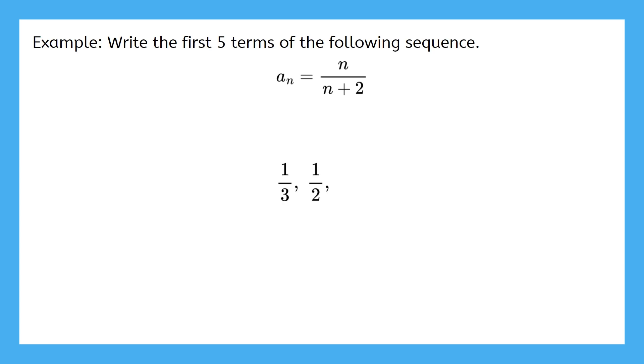For a3, we substitute 3 for n, giving us 3 fifths. For a4, we actually end up getting 4 over 6 when we substitute 4 for n, but let's just write that as 2 thirds. Finally, for n equals 5, we get 5 over 7. Notice that we could really substitute any term that we want. We could even do a50. Then a50 would be 50 over 52, better written as 25 over 26.